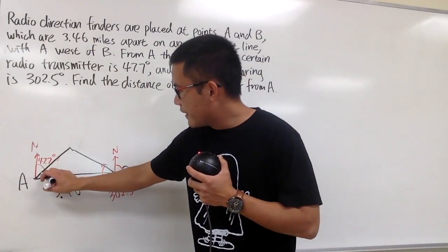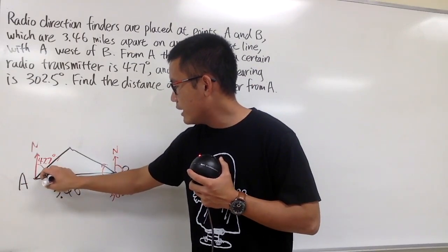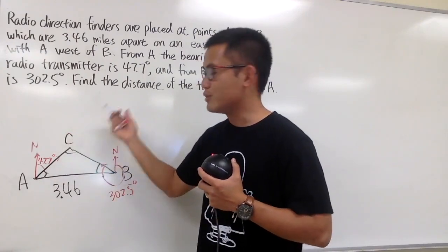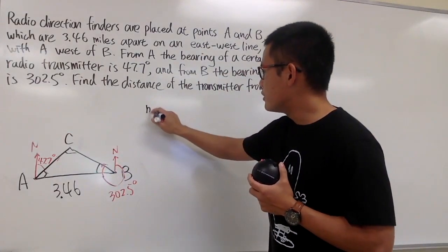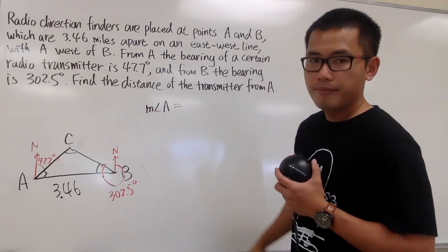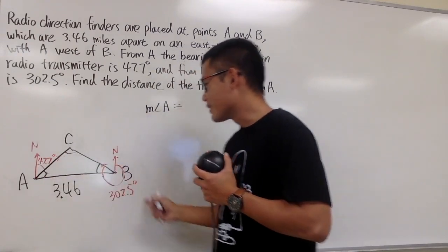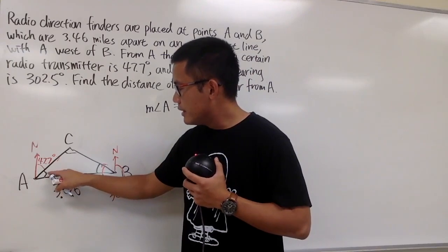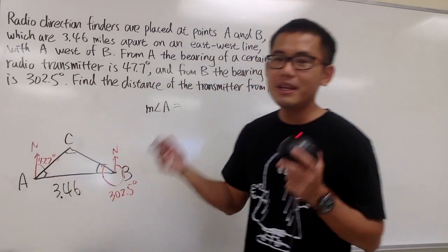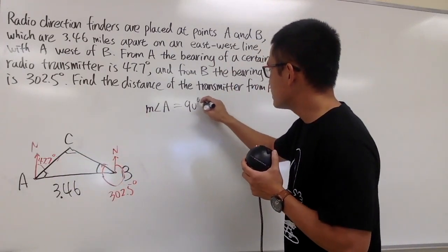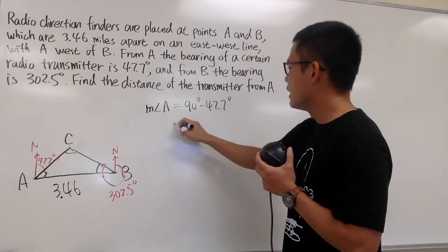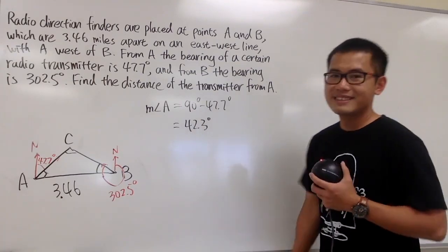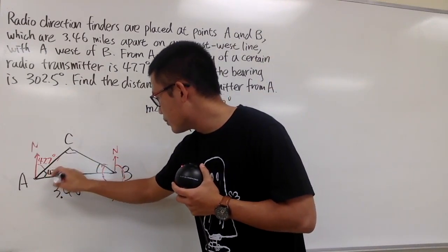We should find the angles inside the triangle. Let's find angle A. North is straight up and the east-west line is horizontal, so together they form 90 degrees. This much in red was 47.7 degrees already. So angle A is 90 degrees minus 47.7 degrees, which gives us 42.3 degrees. I'll indicate that right here — 42.3 degrees.